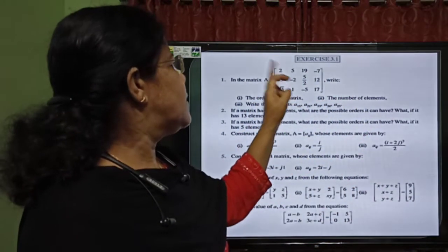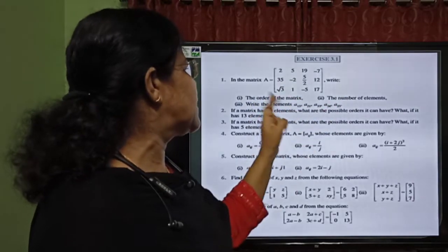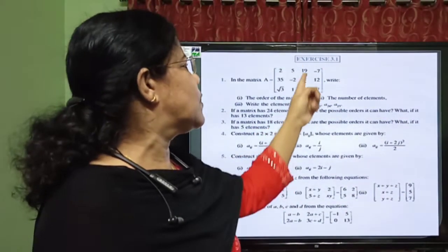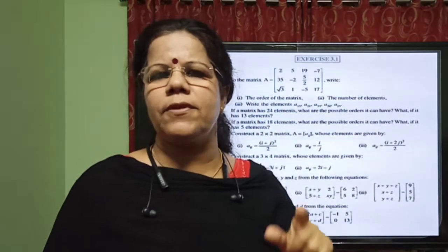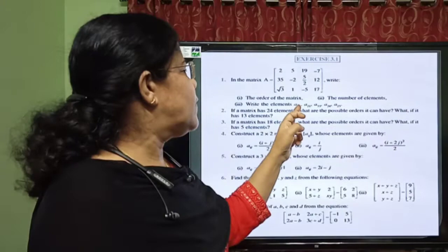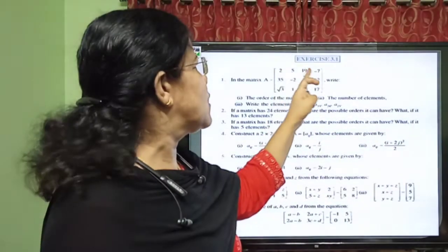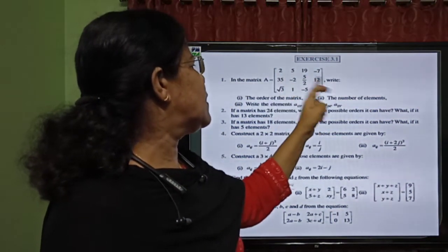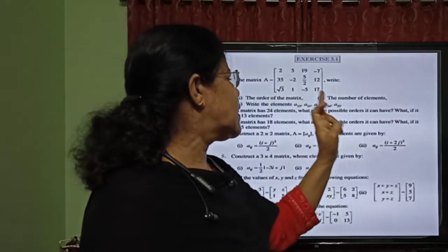In the first question, a matrix is given and you are asked to write the order, the number of elements, and identify some specific elements. There are 3 rows and 4 columns, so the order is 3 by 4. Since the order is 3 by 4, there will be 3 into 4, that is 12 elements. A_13 belongs to the first row and third column, which is 19. A_21 is in the second row and first column, which is 35.